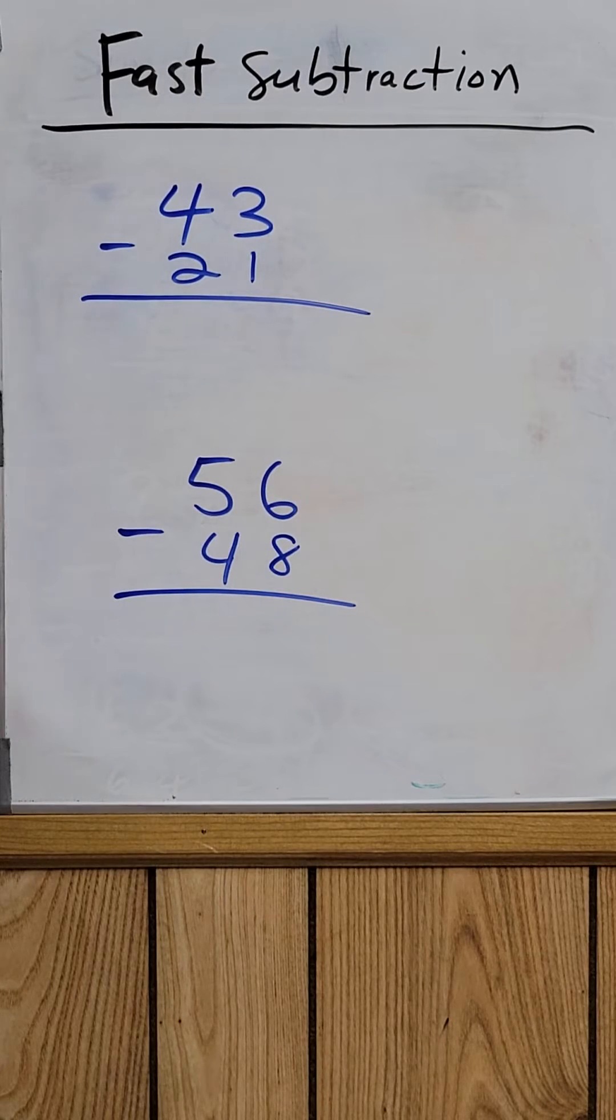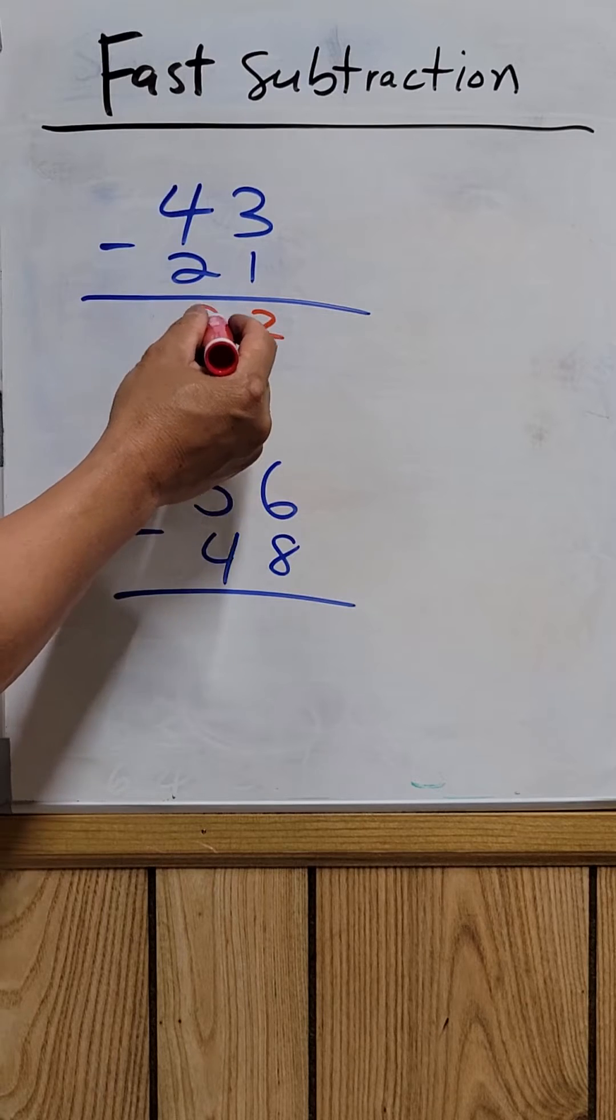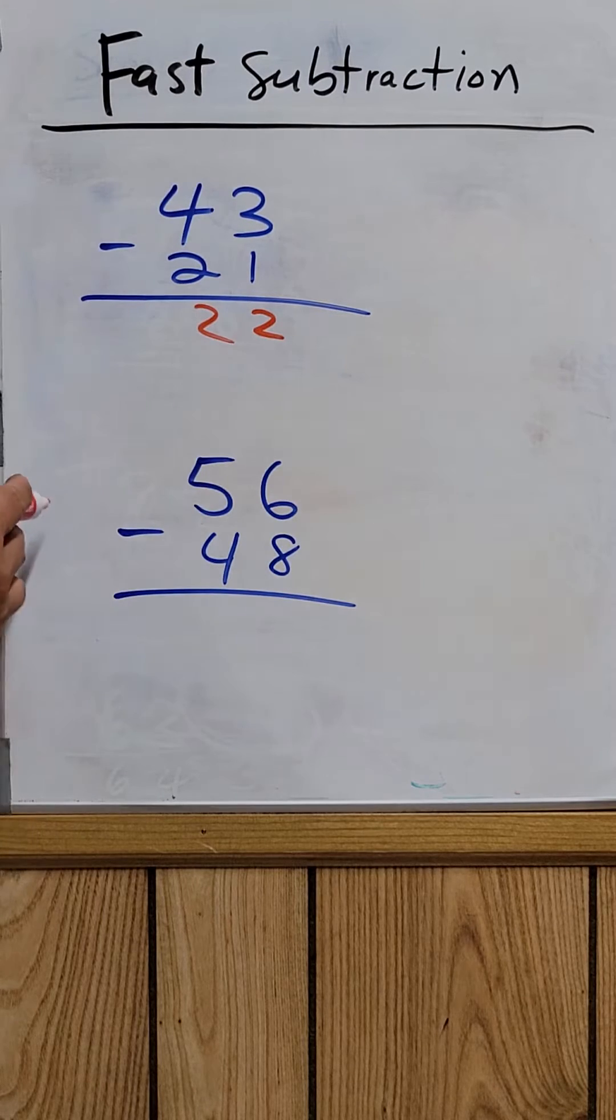Hello, welcome to my math channel. Today I'm going to show you how to do fast subtraction. The first example right here is easy to do: 43 minus 21 is 22, the answer.